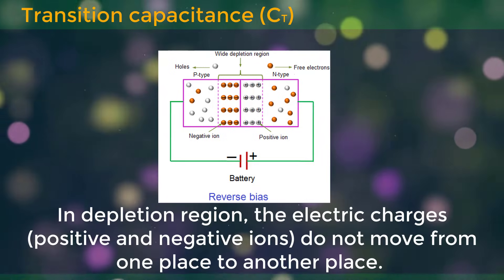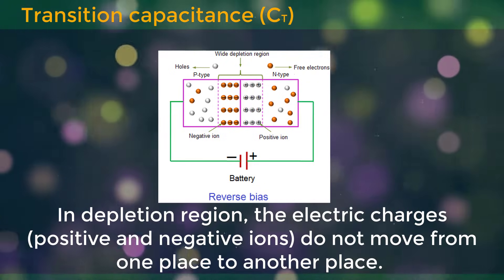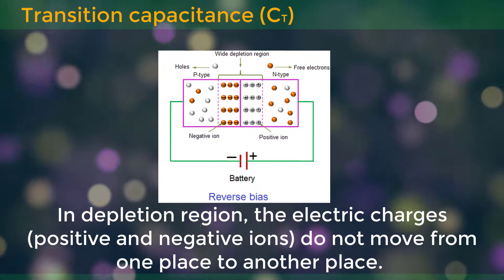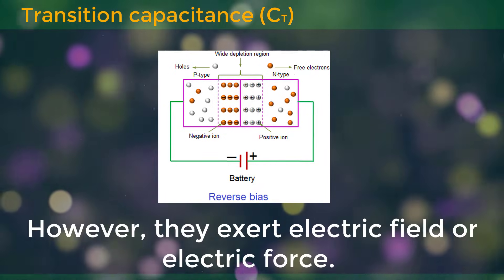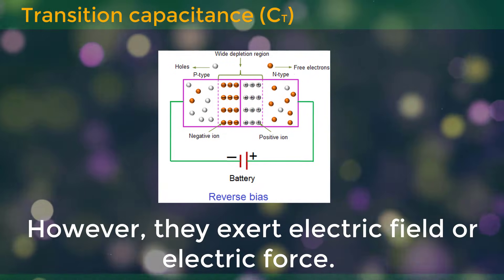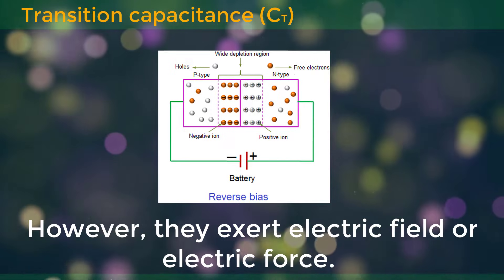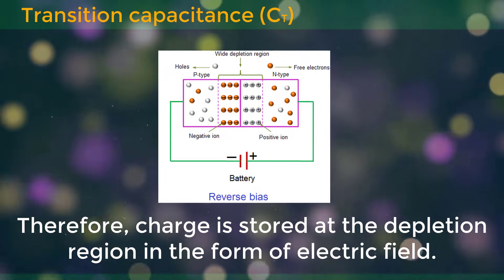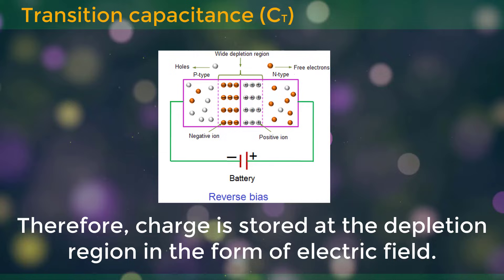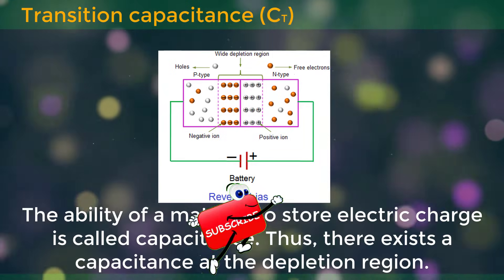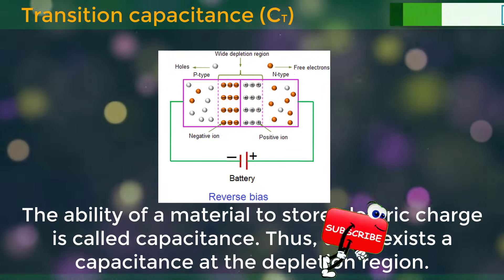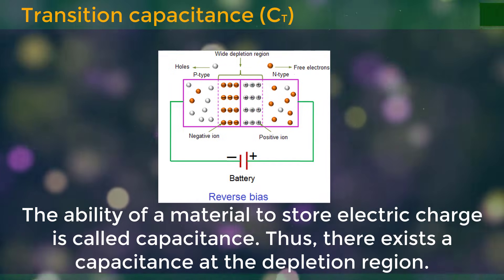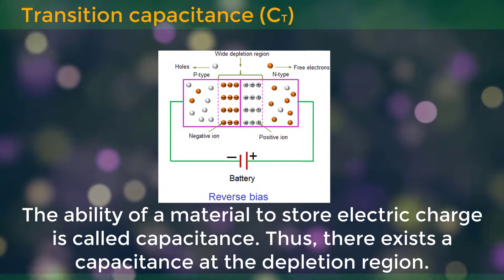In the depletion region, the electric charges — positive and negative ions — do not move from one place to another. However, they exert electric field or electric force. Therefore, charge is stored at the depletion region in the form of electric field. The ability of a material to store electric charge is called capacitance. Thus, there exists a capacitance at the depletion region.